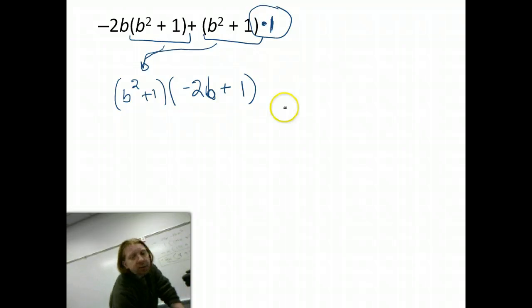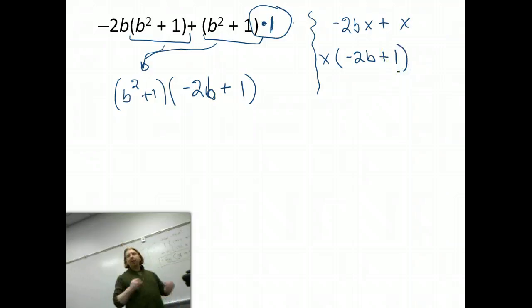That plus one does make a difference. Remember, the analog we talked about on the board. If I had negative two times x plus x, and I factored an x out, I would have x, negative 2b, and then plus what? One. Because x divided by x just leaves one. Because there's an understood one in front of every variable.